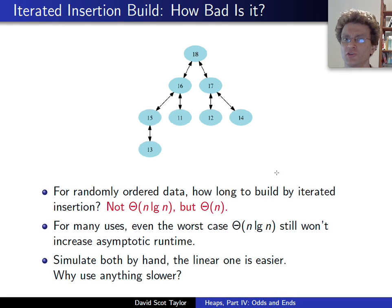On the other hand, if you simulate both of these by hand, the linear one is easier. And coding the linear one, once you have the build heap operation coded, it doesn't take, is easy to code anyway. So why not actually use the linear time one? No reason. You should use the linear time one. It's better. But just not that much better.